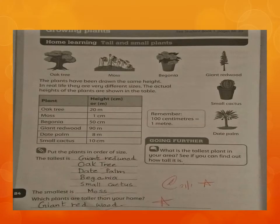Now this is the last page of today — page 84 of your workbook. Write date and day on this page: classwork, 15th January 2021, and the day is Friday. You can see many trees and plants on this page. The first tree is the oak tree, then we have moss, begonia, giant redwood, small cactus, and a date palm.